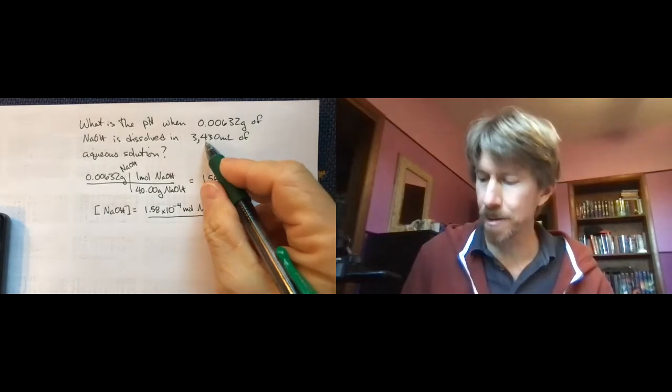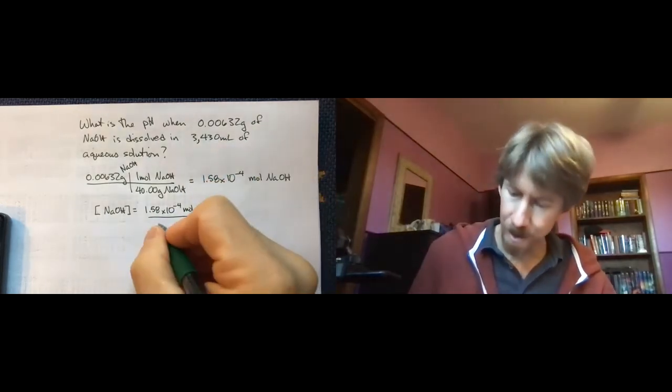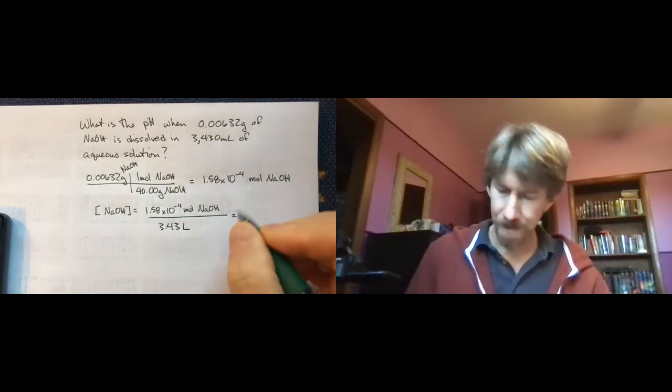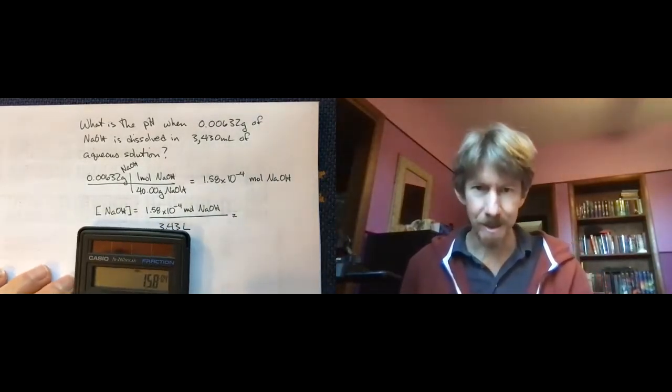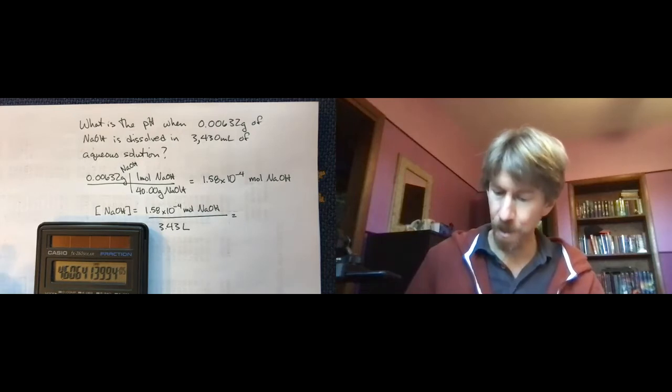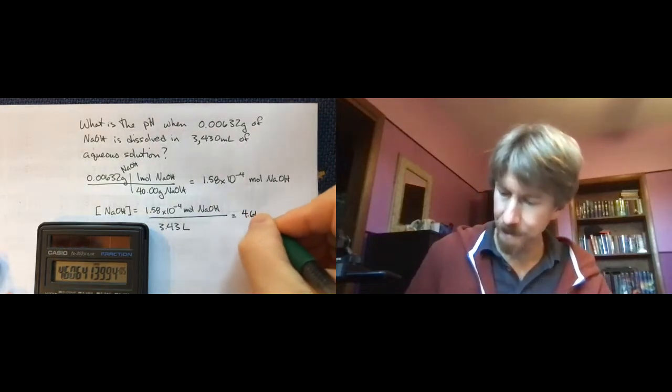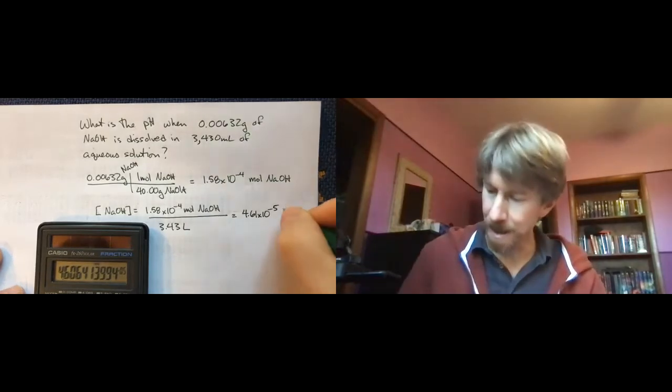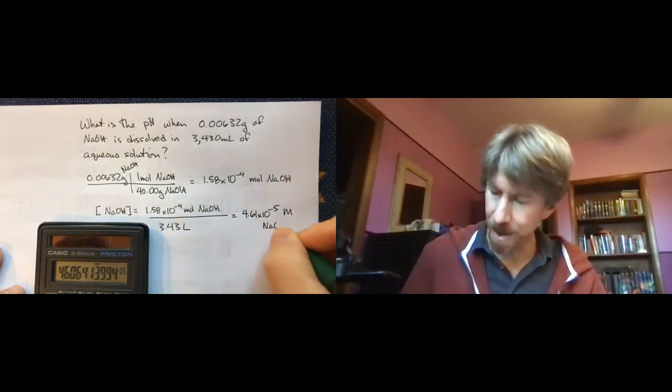milliliters. So this will be 3.430 or 3.43 liters to three sig figs. So take my moles, divide it by 3.43. I get 4.61 times 10 to the minus 5th molarity sodium hydroxide.